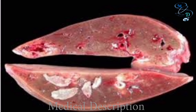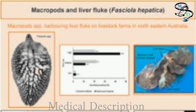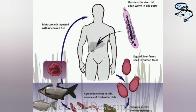Diagnosis of Clonorchis infection is based on microscopic identification of the parasite's eggs in stool specimens. Safe and effective medication is available to treat Clonorchis infections. Adequately freezing or cooking fish will kill the parasite. Praziquantel or albendazole are the drugs of choice to treat Clonorchis infection.